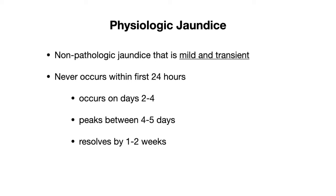Physiologic jaundice is non-pathologic jaundice that is mild and transient, and it occurs in a majority of newborns. When examining a newborn, the goal is to try to differentiate physiologic jaundice from something that is pathologic, and there are some markers that you can look for to help differentiate between the two.